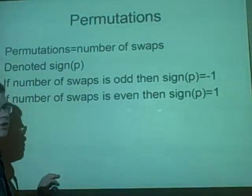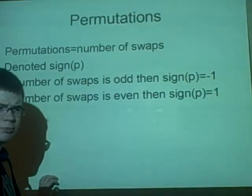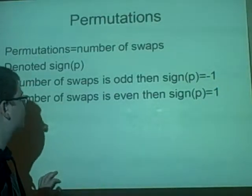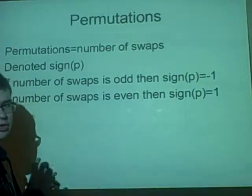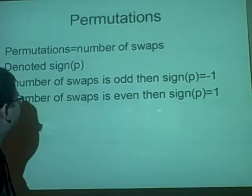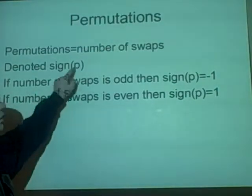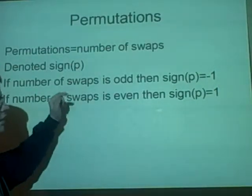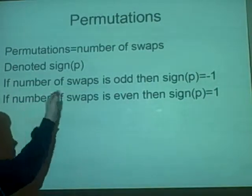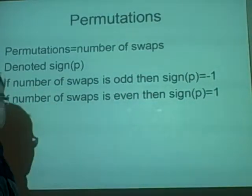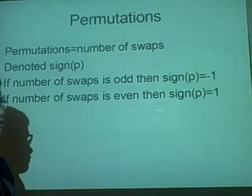Permutations. He did a bit on this. It's the number of swaps you do. This will make sense later. It's denoted as sgn P, and P is the number of swaps. If it's odd, then sgn P is minus 1, and if it's even, sgn P is 1.